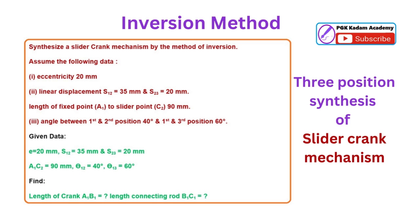Assume the following data: first, eccentricity equal to 20 mm. Second, linear displacement S1-2 equal to 35 mm and S2-3 equal to 20 mm. Length of fixed point A1 to slider point C2 is 90 mm. Third, angle between first and second position 40 degrees, and first and third position 60 degrees.